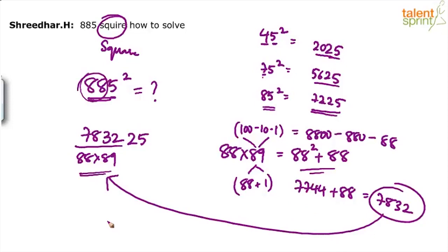So Sridhar, I think this is not new. We have discussed this in our speed math video. If you look at the speed math video, we have discussed how to find out squares of numbers ending in 5. 885 also is no different. It's just that instead of 85, it is 885. So 88 should be multiplied with 89.